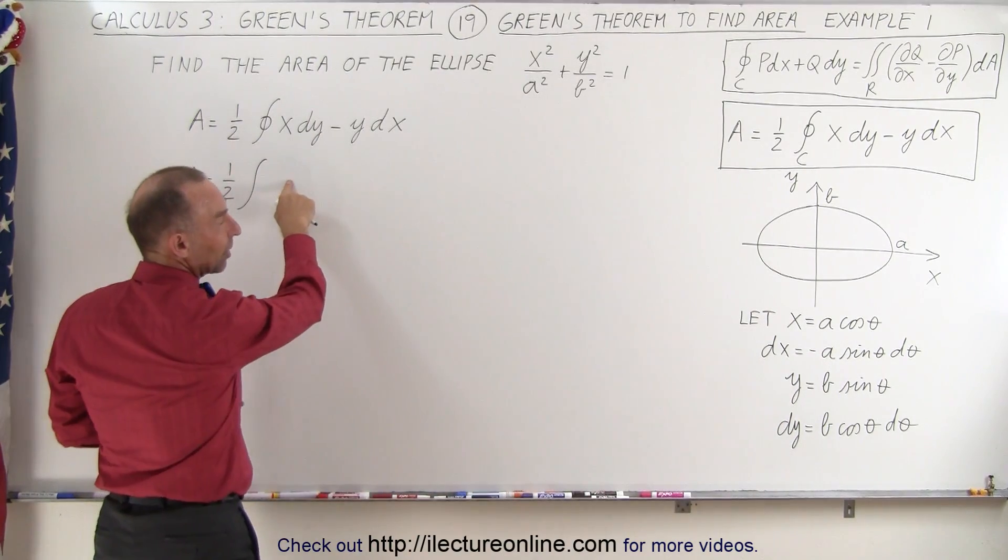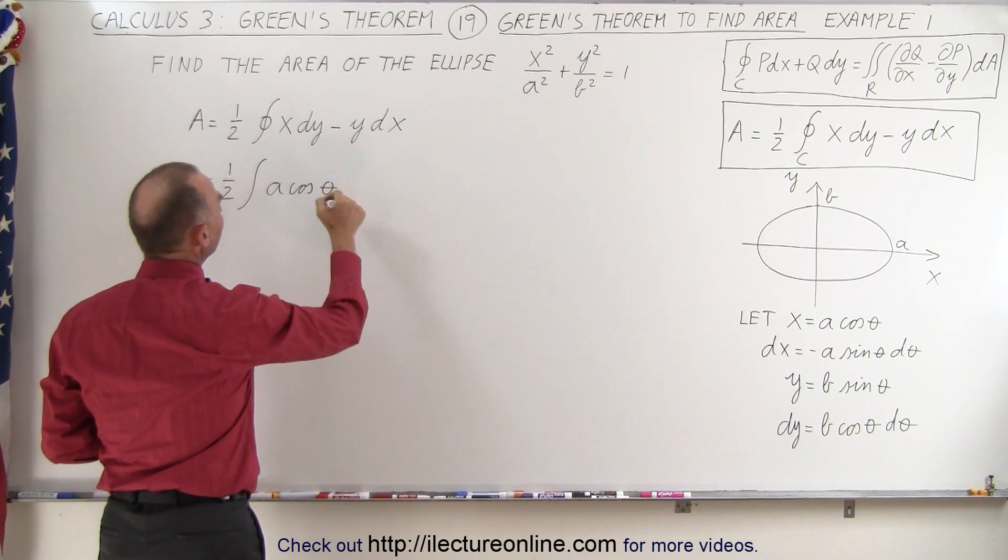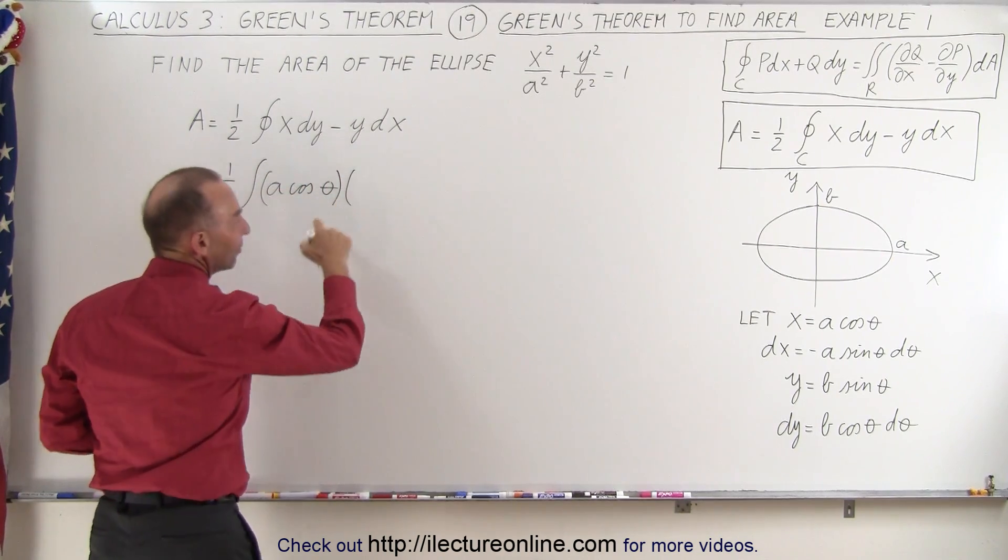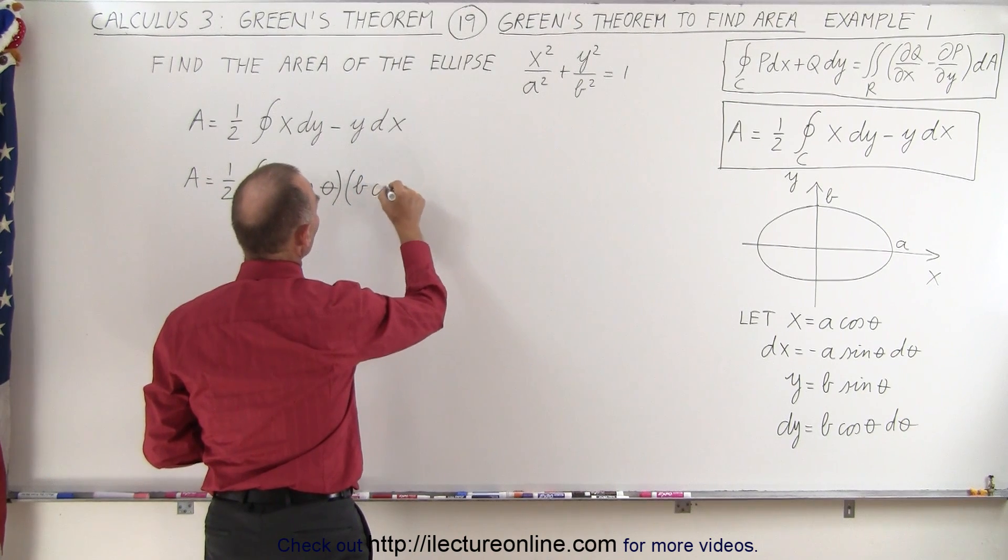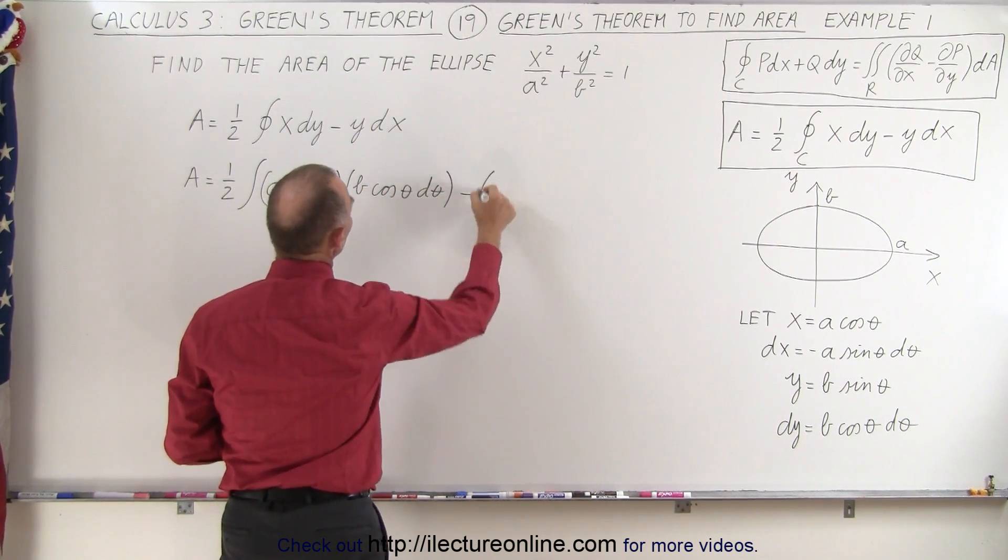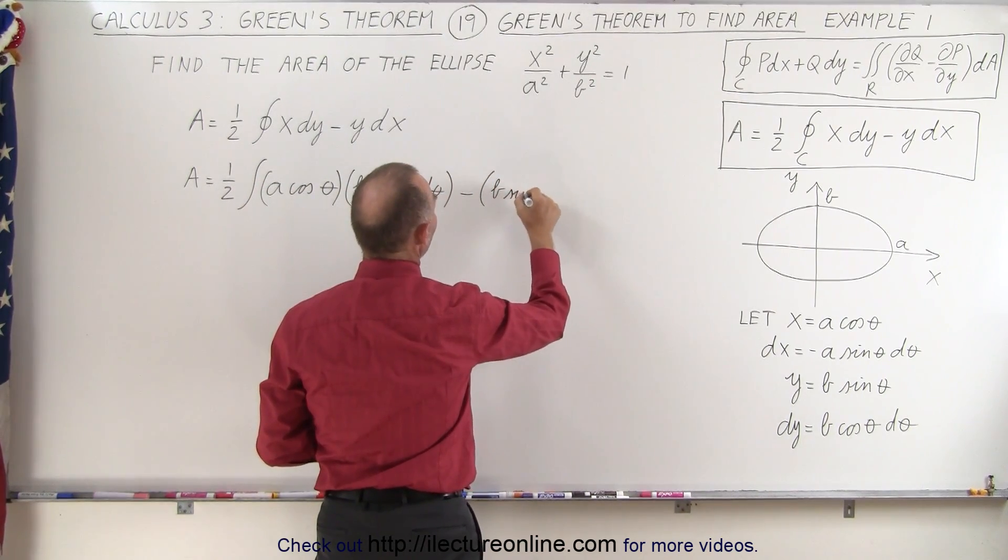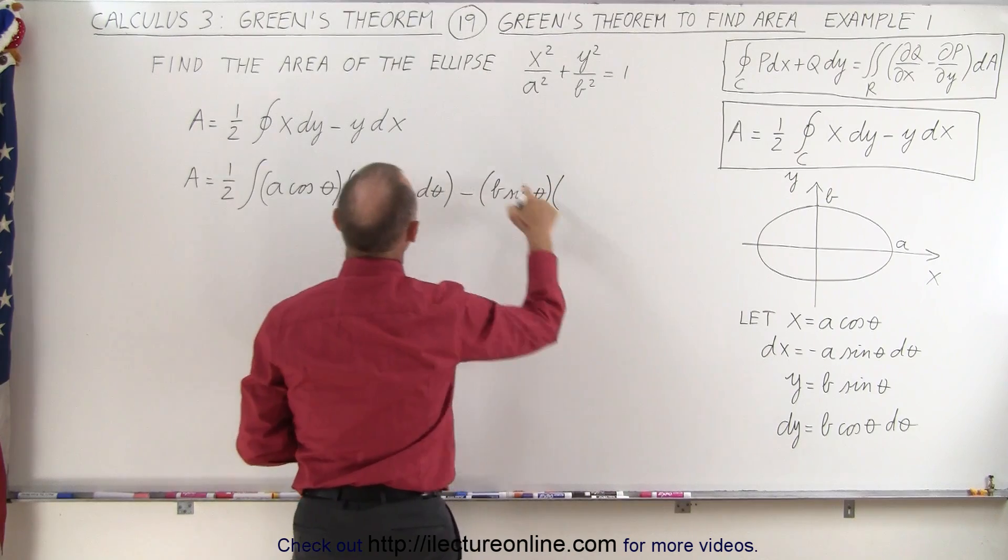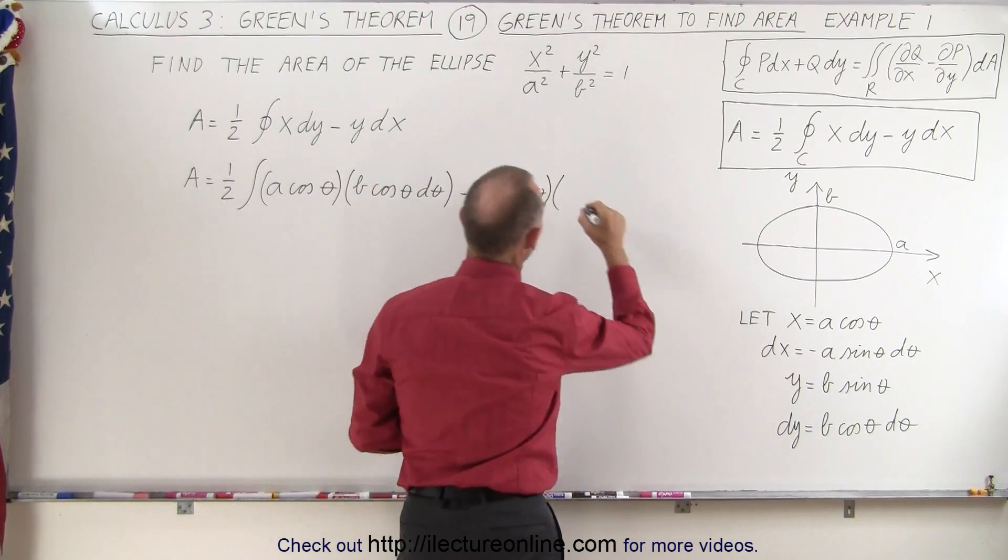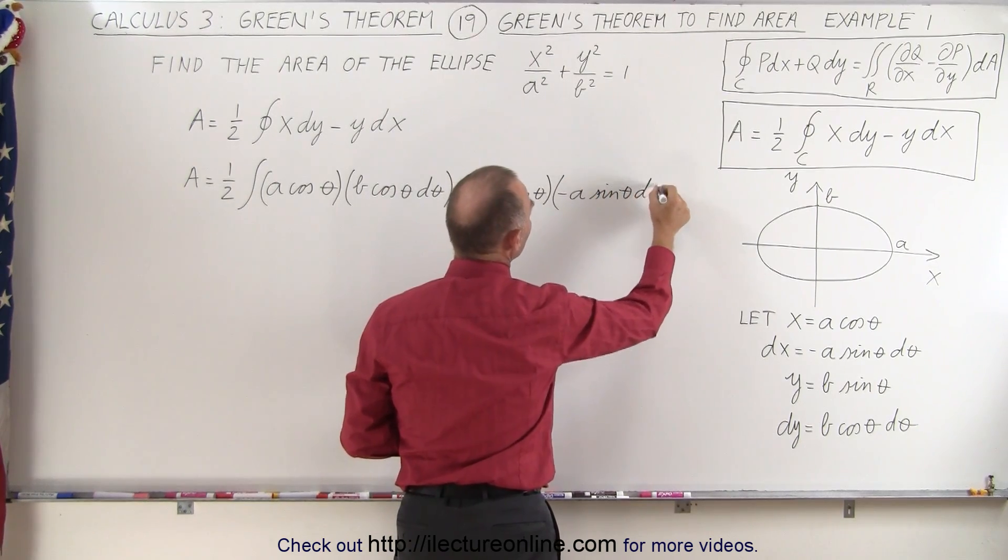So x is now going to become a times the cosine of theta multiplied times dy, which is b times the cosine of theta d theta, minus y, which is equal to b times the sine of theta, multiplied times dx, which is minus a times the sine of theta d theta.